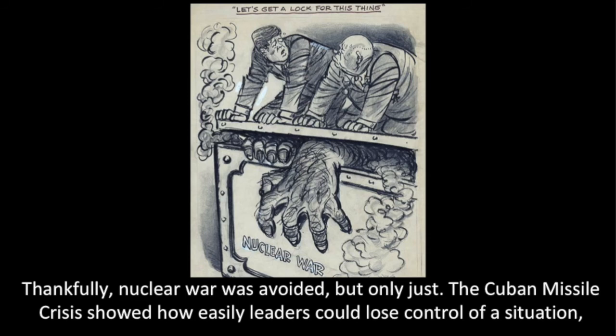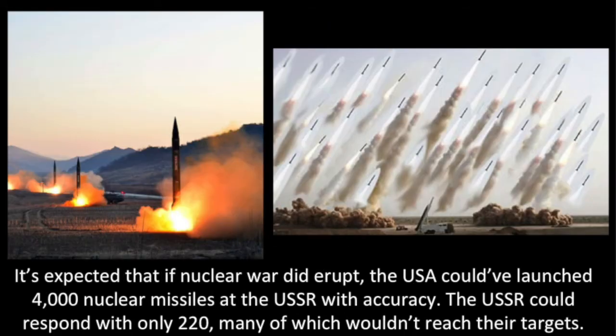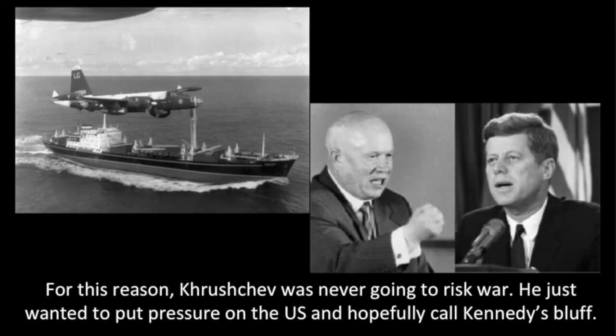The Cuban Missile Crisis showed how easily leaders could lose control of a situation, and how the strategy of brinkmanship — inching closer and closer to the brink of war before backing down to assert dominance — could easily have led to global disaster. If nuclear war had erupted, the USA could have launched 4,000 nuclear missiles at the USSR with accuracy, while the USSR could respond with only 220, many of which wouldn't reach their targets. For this reason, Khrushchev was never going to risk war — he just wanted to put pressure on the US and hopefully call Kennedy's bluff.